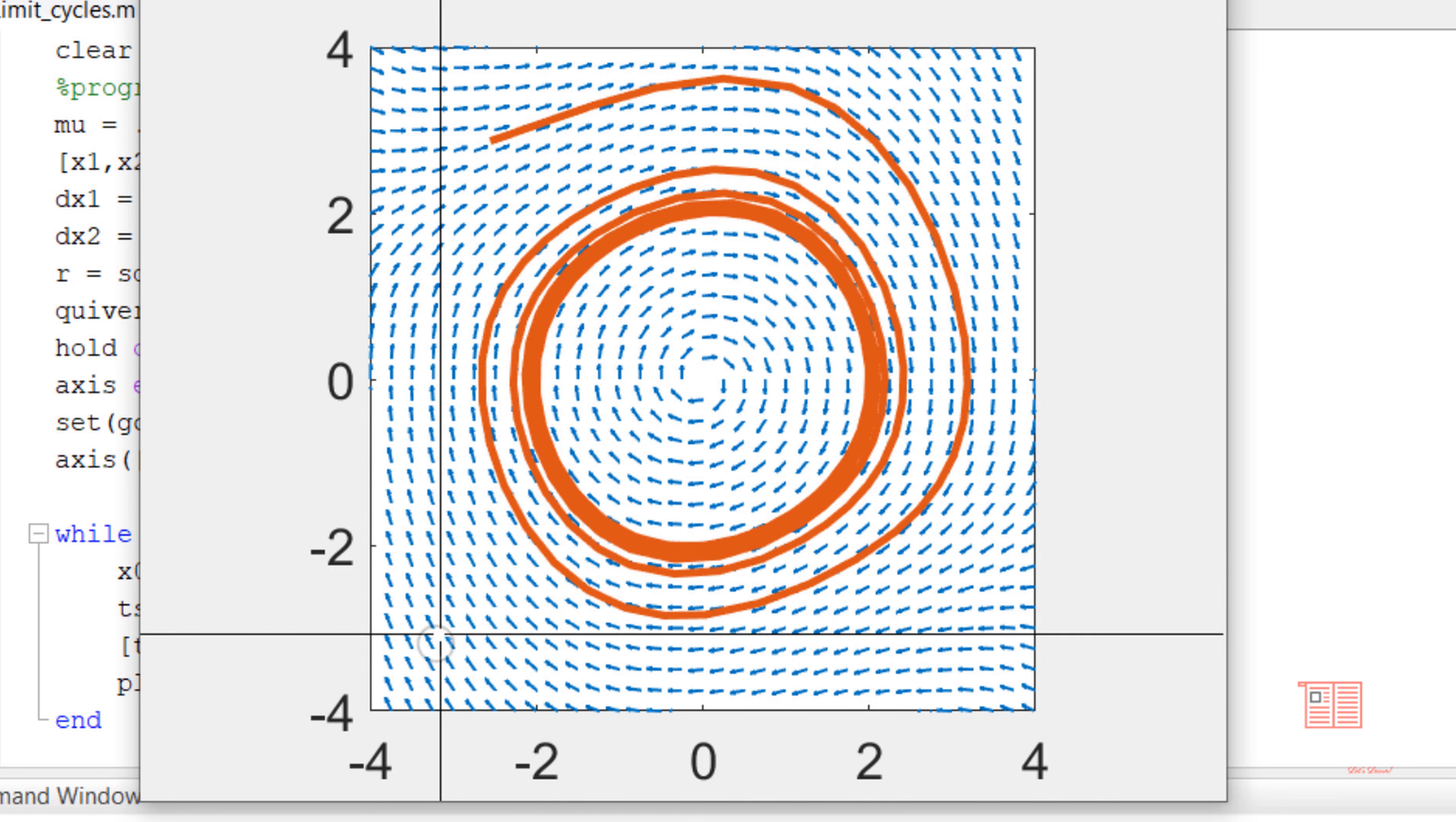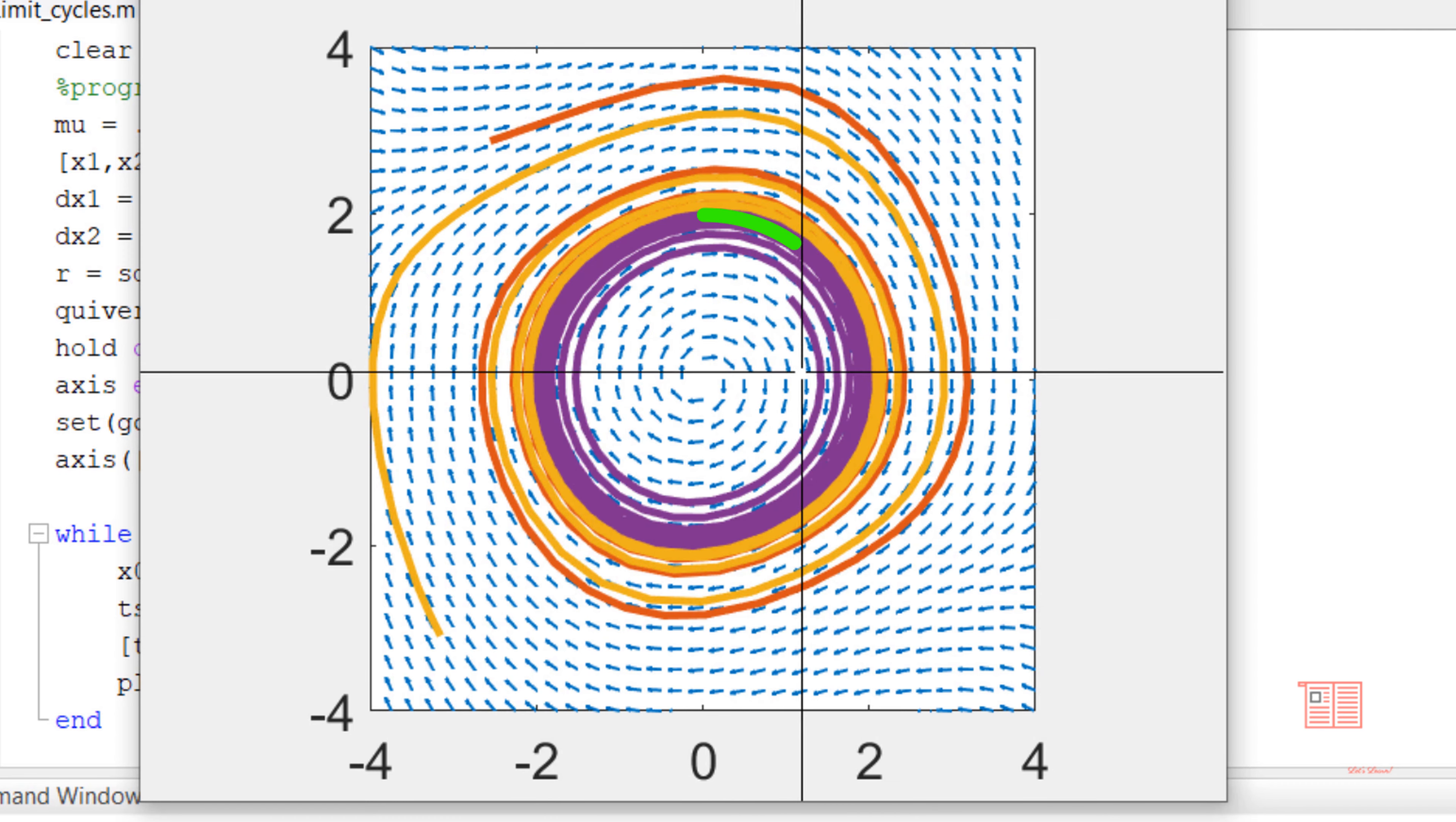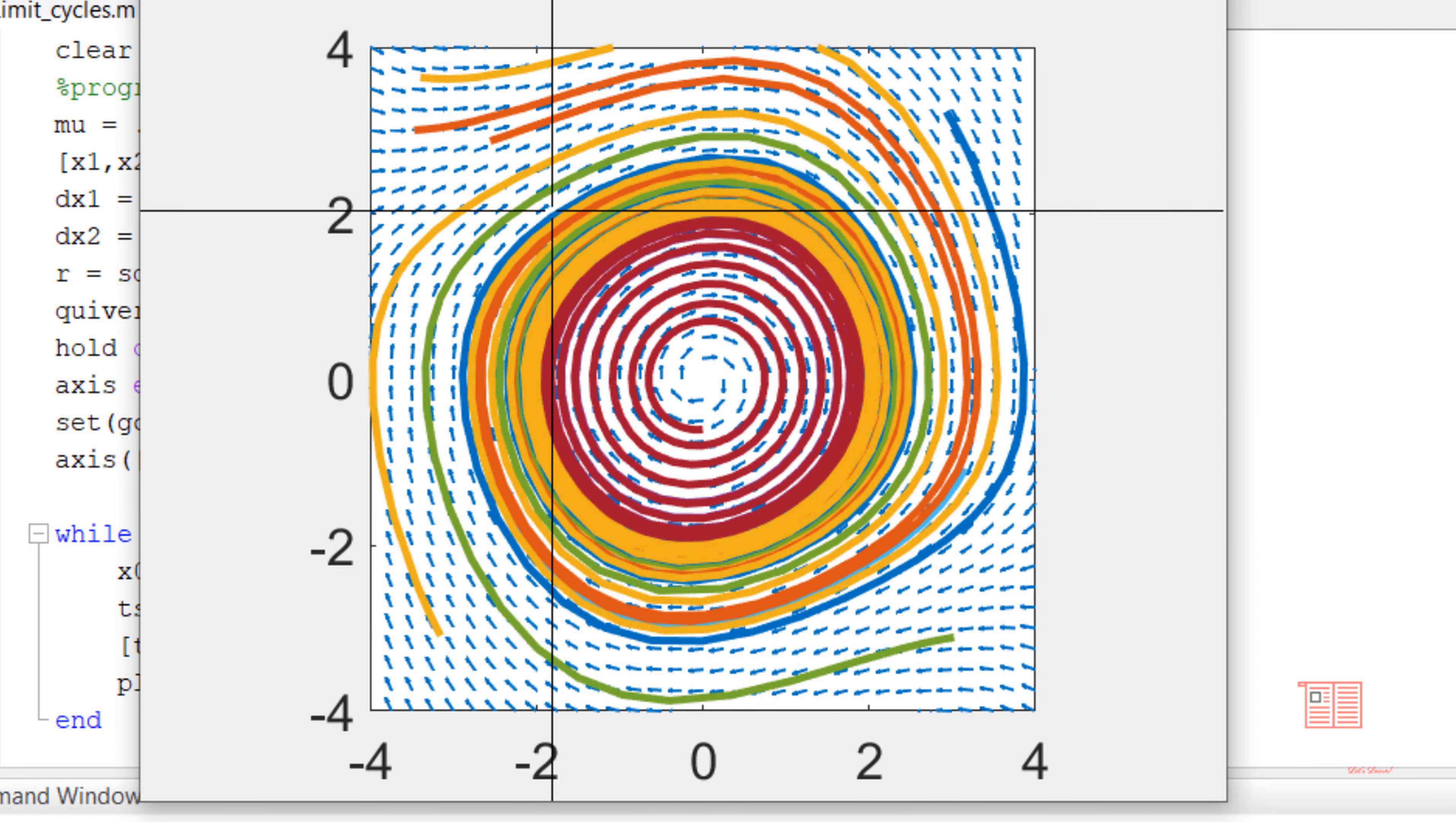Now, let me choose another initial point. You can see that again the trajectory has fallen into the same closed loop. Let me choose something inside. Again the trajectory has fallen into the same limit cycle. This will be the case no matter where the initial points are chosen. All the trajectories are falling into the same limit cycle.